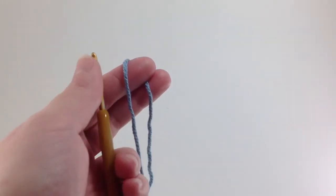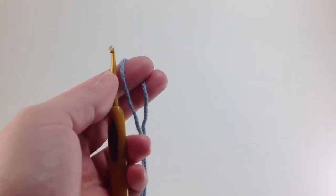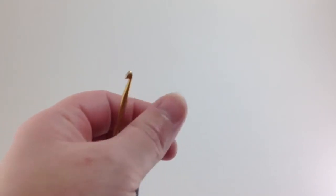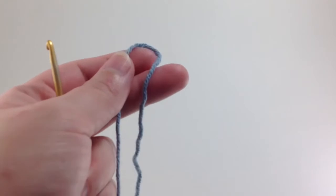If you have any experience with the magic loop method for crochet, it works kind of in the same way. Just a slight modification so you can use it for your circular knitting projects.